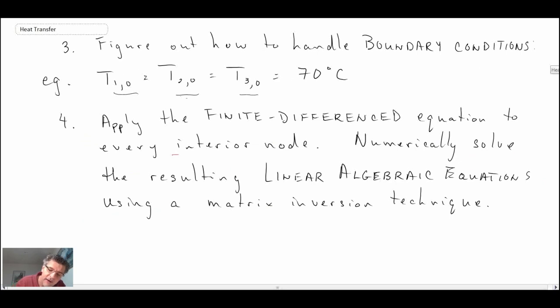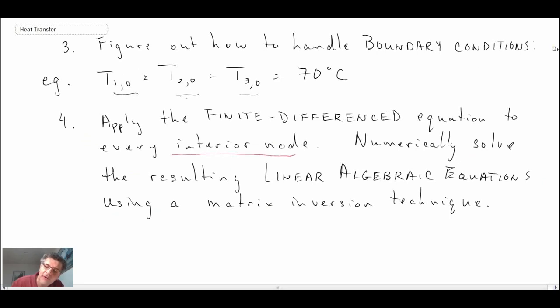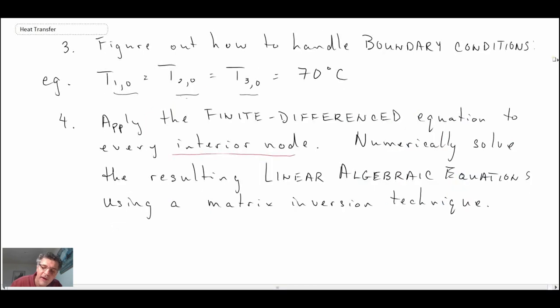You apply that to every interior node. Looking back at our grid, that would be all of the interior node locations. The external surfaces have all had the boundary conditions applied there. The corners you got to be a little careful with because the boundary conditions are going to be essentially an average of what's going on on each of the walls. But those ones have been handled by the boundary conditions. It's the interior nodes that we're going to apply the mathematical physics equation to.